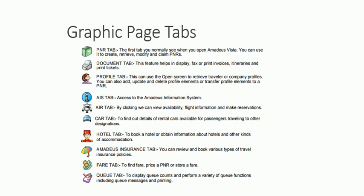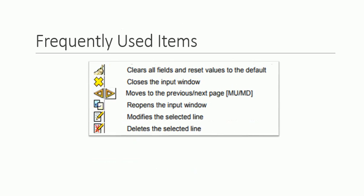There are also frequently used items in the Amadeus system visible on the main page. Different options include clearing all field research values to default, closing the input window, reopening the input window, modifying the selected line, and deleting the selected line. You have a wide range of options and customization available.